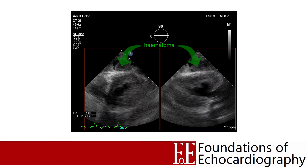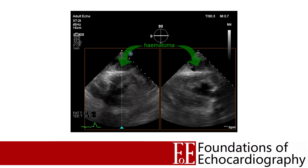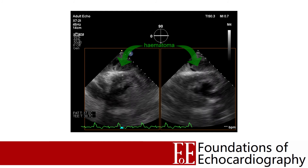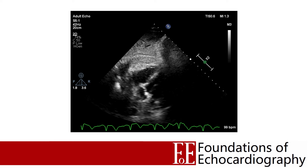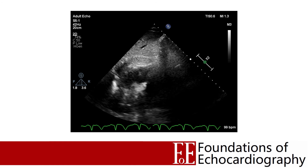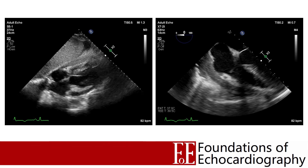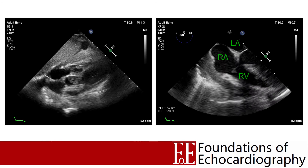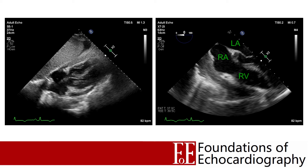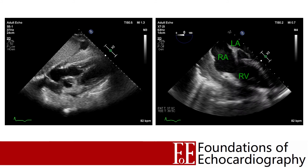One example shows a patient who deteriorated on the first night following valve surgery — transthoracic views were completely non-diagnostic, but on TOE transgastric views a very large haematoma was immediately identified and evacuated. Further examples include a subcostal clip from an elderly gentleman presenting four days after chest pain with inferior ischaemia on ECG, showing a haematoma inferior to the RV due to RV free wall rupture. Another case shows pericardial empyema due to Streptococcus — appearing echo-bright compared with blood inside the heart on both TTE subcostal and TOE mid-oesophageal four-chamber views.